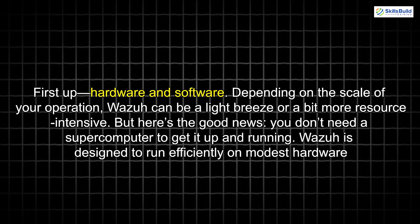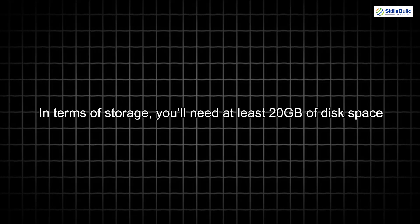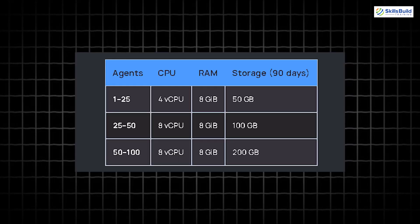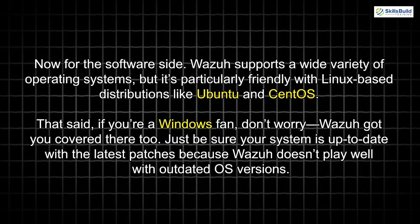Here's the good news: you don't need a supercomputer to get it up and running. Wazuh is designed to run efficiently on modest hardware. At a minimum, you'll need a system with a 2-core CPU and at least 4GB of RAM, though I'd recommend bumping up to 8GB for a smoother experience, especially if you're managing multiple endpoints. In terms of storage, you'll need at least 20GB of disk space, but this can vary depending on how many logs you plan to collect. Wazuh supports a wide variety of operating systems, but it's particularly friendly with Linux-based distributions like Ubuntu and CentOS. If you're a Windows fan, don't worry — Wazuh has you covered there too. Just be sure your system is up to date with the latest patches, because Wazuh doesn't play well with outdated OS versions.